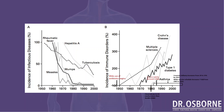What you're looking at is a graph or diagram. On the left-hand side you can see incidence of infectious diseases — rheumatic fever, hepatitis, tuberculosis, mumps, measles. We're looking from 1950 to 2000 and we see these dramatic reductions. On the other side of this equation, using the same timeframe, we're looking at autoimmune conditions: multiple sclerosis, Crohn's disease, type 1 diabetes, and asthma. And what you see is an exponential increase in these conditions since 1950.